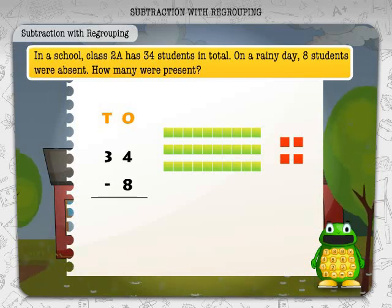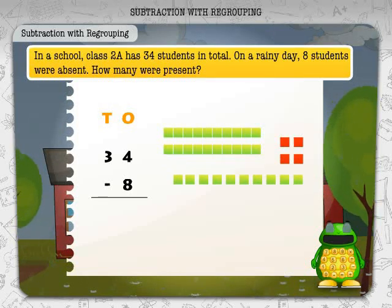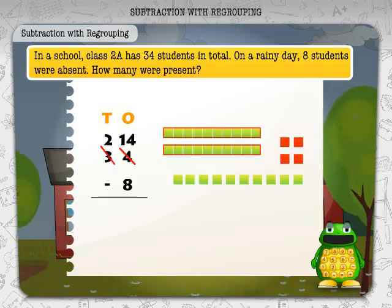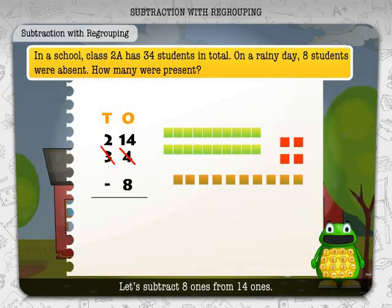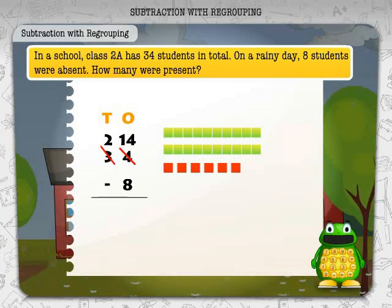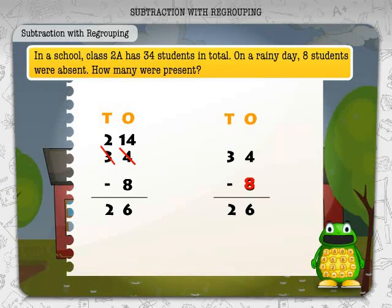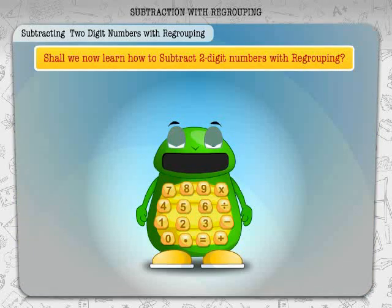To subtract eight we need to remove eight ones, but we have only four. So we break up one of the tens into ten ones. We now have fourteen ones and two tens. Subtracting eight from fourteen ones leaves six ones. We write six in the ones place and two in the tens place. 34 minus 8 is equal to 26.